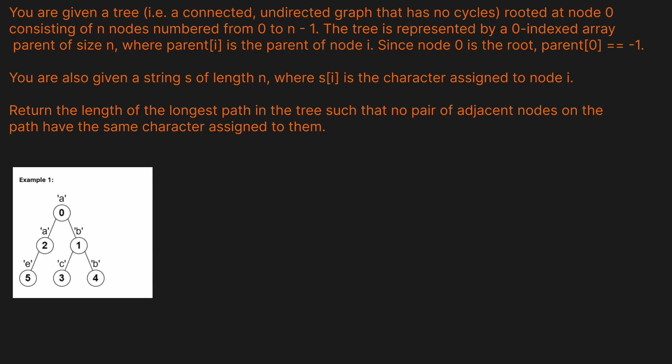You are given a tree — a connected undirected graph that has no cycles — rooted at node 0, consisting of n nodes numbered from 0 to n-1. The tree is represented by a 0-indexed array 'parent' of size n, where parent[i] is the parent of node i. Since node 0 is the root, parent[0] equals -1. You are also given a string s of length n, where s[i] is the character assigned to the i-th node. Return the length of the longest path in the tree such that no pair of adjacent nodes on the path have the same character assigned to them.